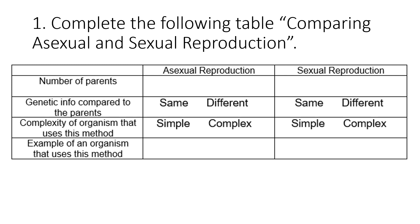Number one: Complete the following table comparing asexual and sexual reproduction. You need to compare asexual and sexual reproduction and write your answers in the corresponding fields. These are the examples for this item.